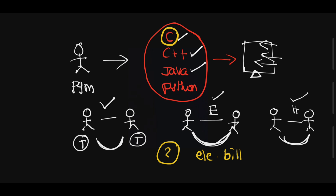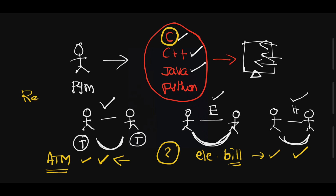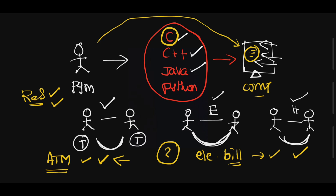Why is programming language needed? For example, today we are paying electricity bills very easily. In the old days, 10 to 15 years back, there was a long process — you had to go to the office and pay the bill. But today we pay within a fraction of seconds. Similarly, you can withdraw cash from an ATM anytime you need money. Reservations and everything we run very easily because we communicate with devices that contain some kind of programming language.